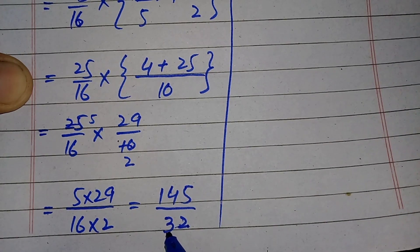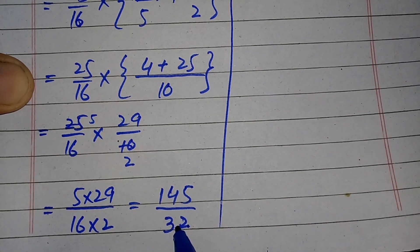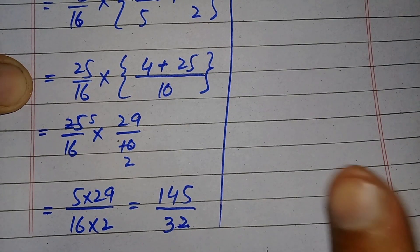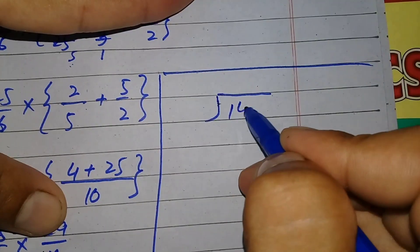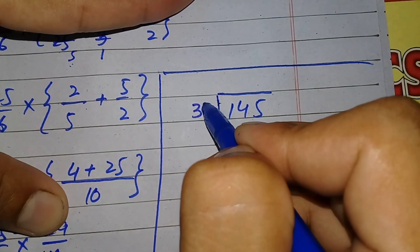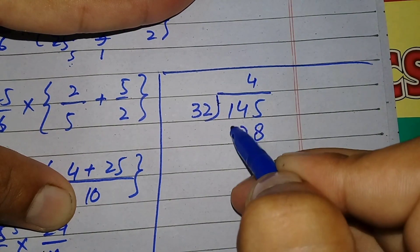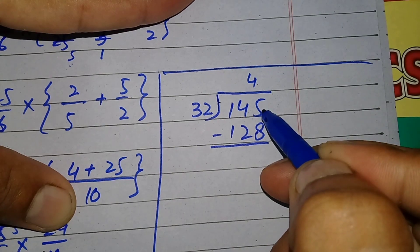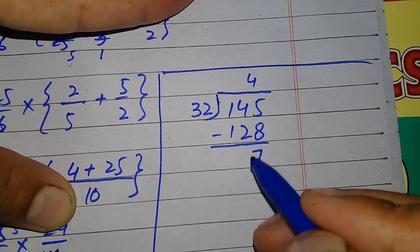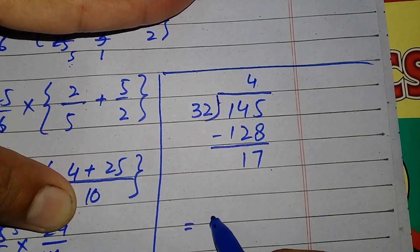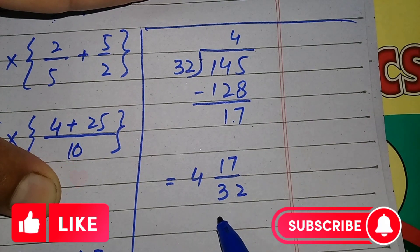That gives us 145 divided by 32. Since the question was given in mixed fraction form, we will convert this improper fraction back to a mixed fraction. We divide the numerator by the denominator: 32 goes into 145 — 4 times 32 is 128, and 145 minus 128 gives remainder 17. So the final answer is 4 whole 17 by 32.